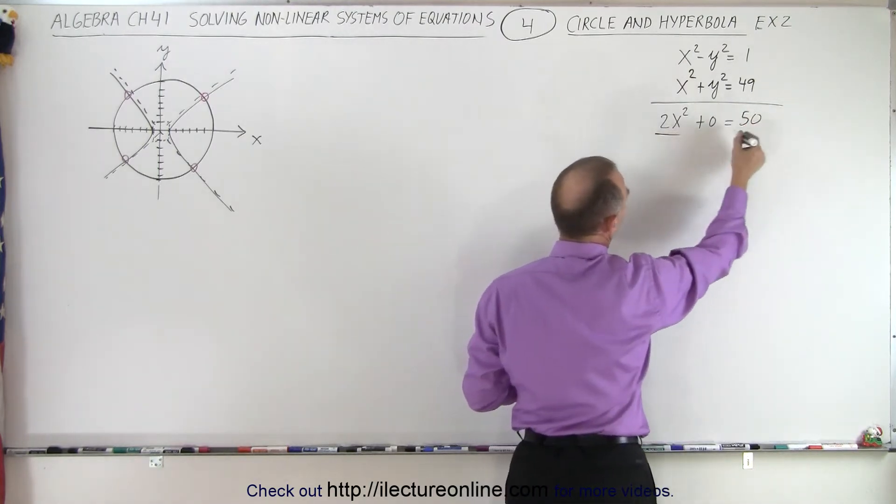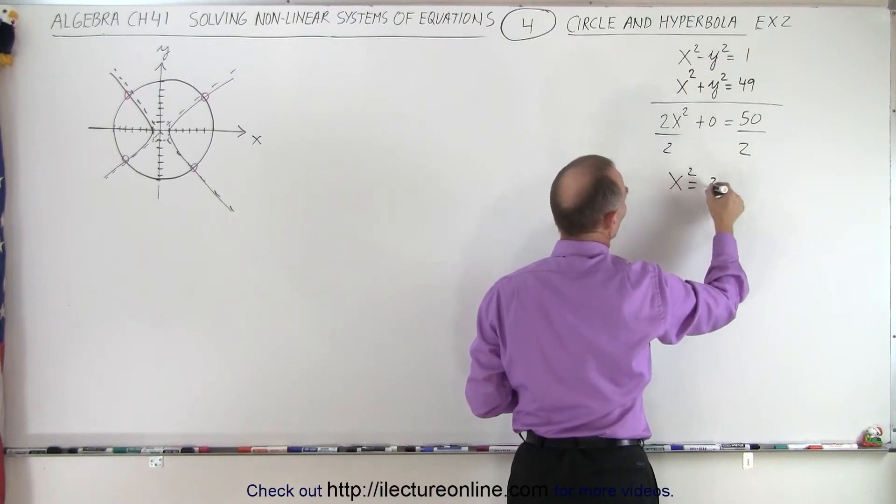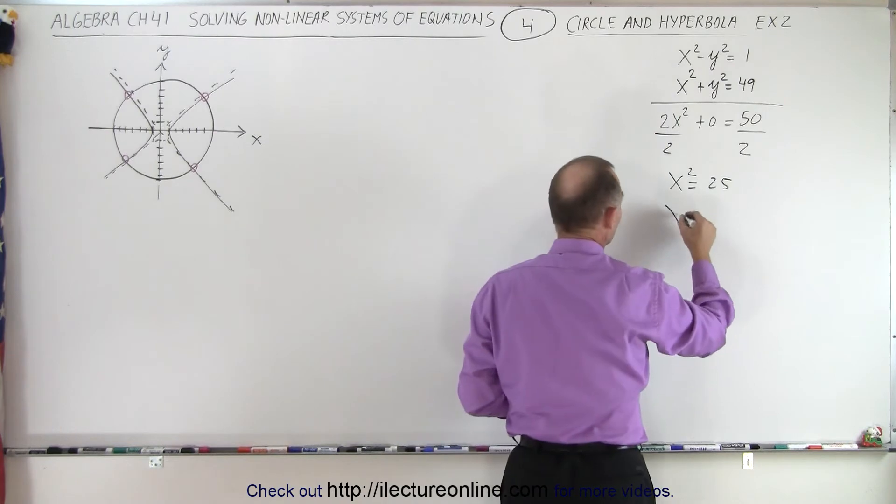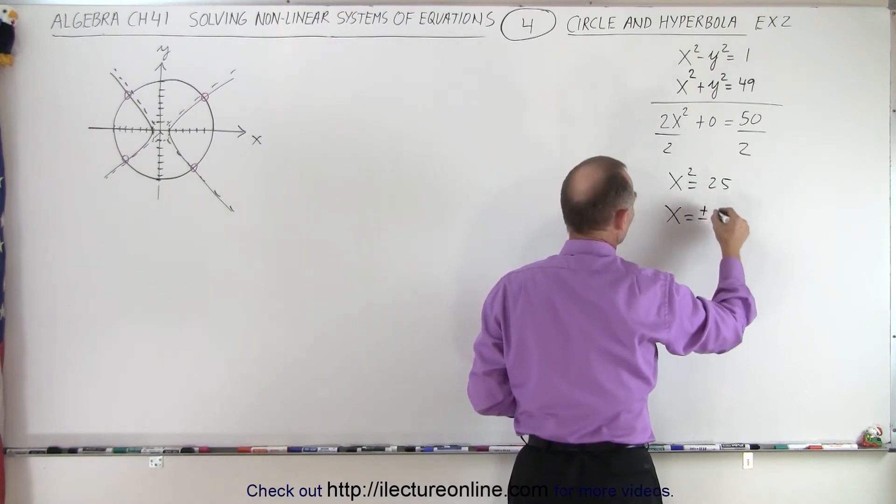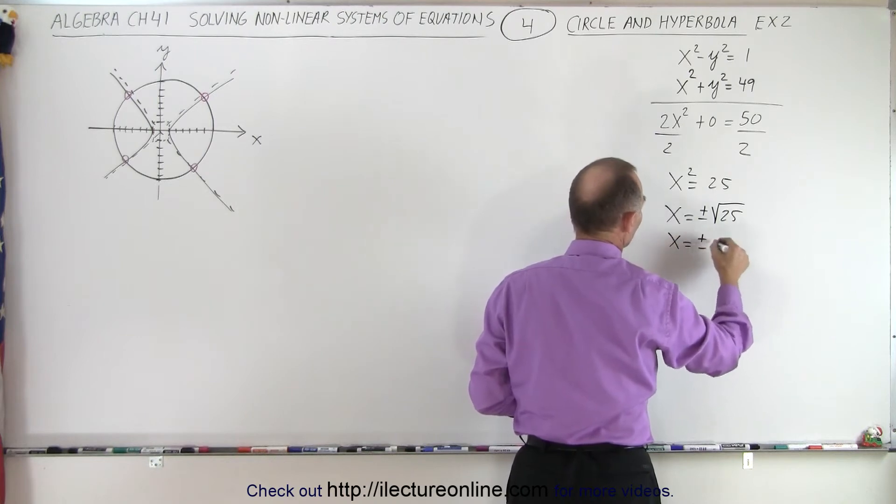So now we divide both sides by 2. We get x squared is equal to 25. And now we take the square root of both sides. We get x is equal to plus or minus the square root of 25, which means that x is equal to plus or minus 5.